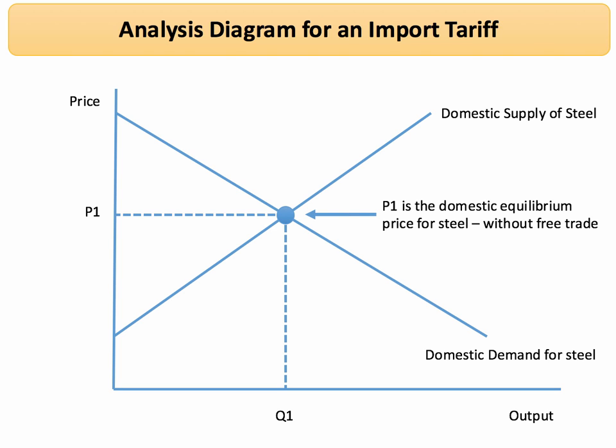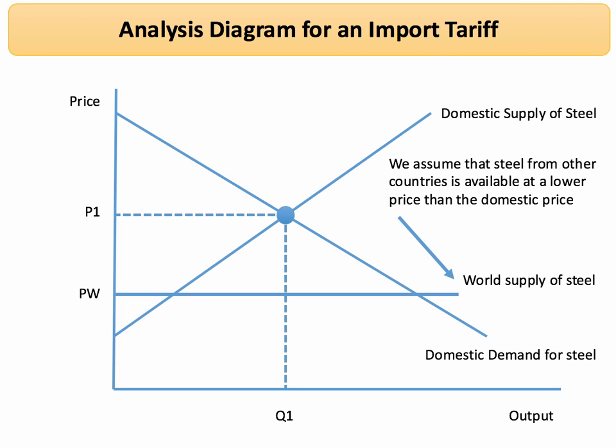P1Q1 is the domestic equilibrium price if there were no trade. Now let's assume that the world supply of steel can come into the market at a cheaper price — that's price PW. This tells us that other countries can produce steel more cheaply, meaning their unit costs are lower and they have a comparative advantage in producing steel.